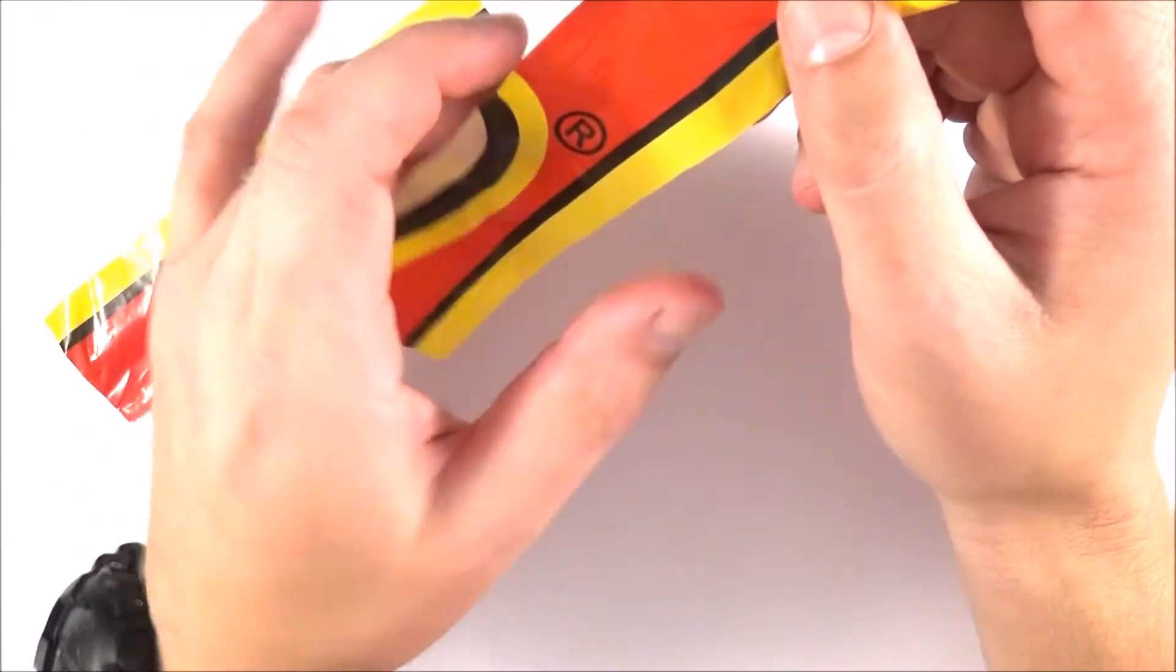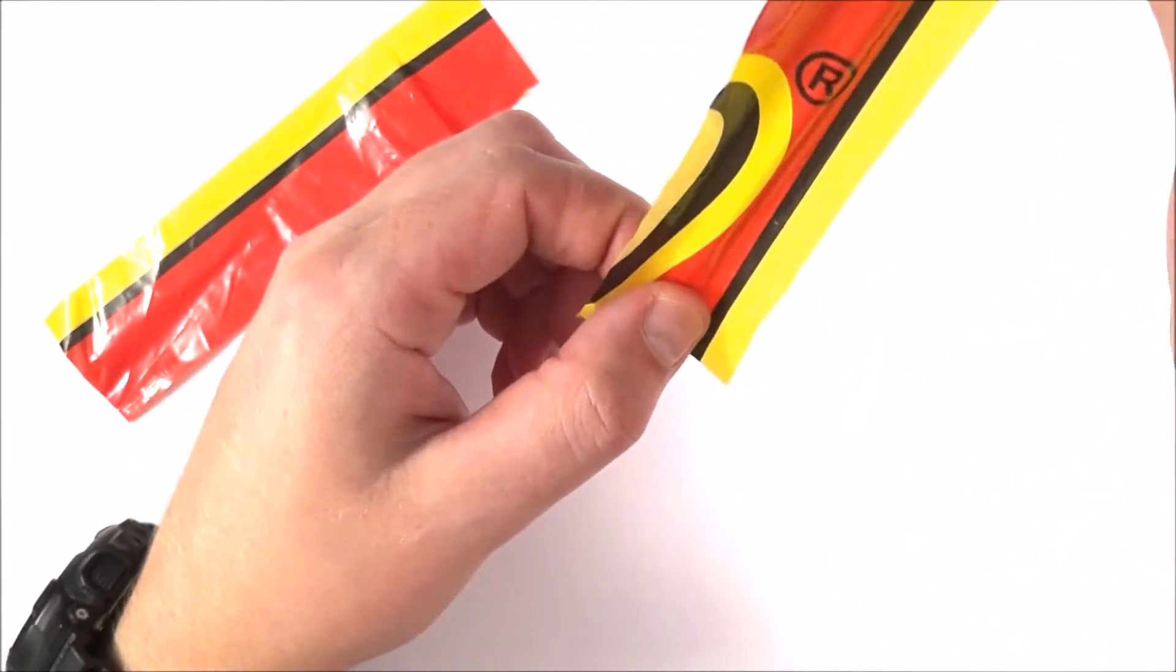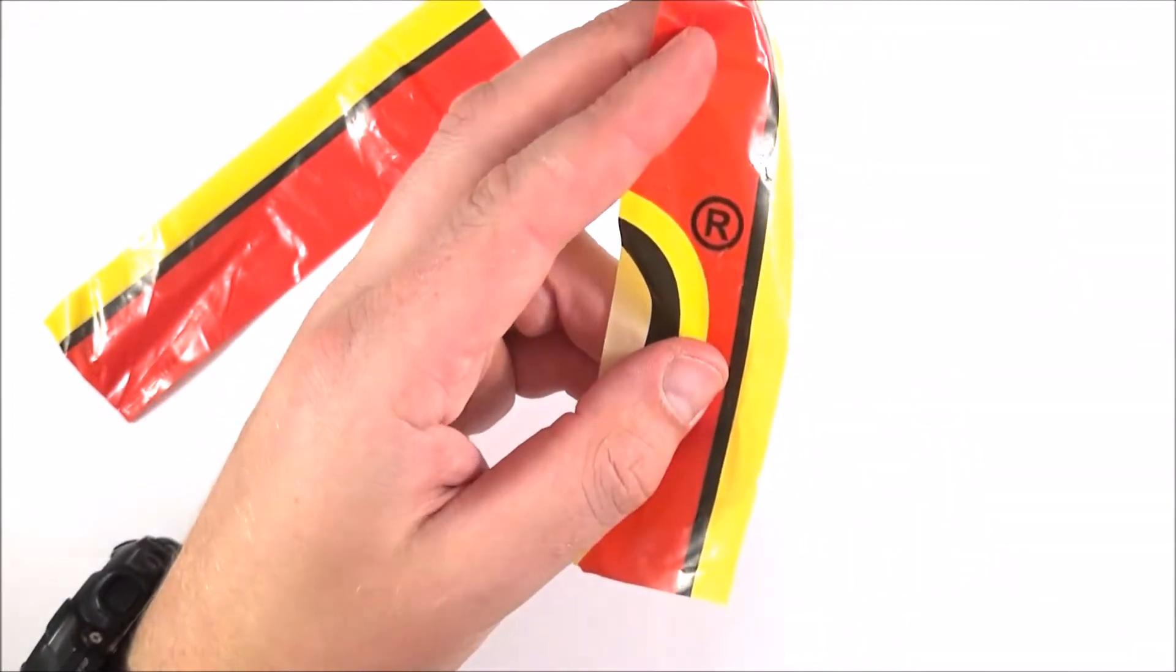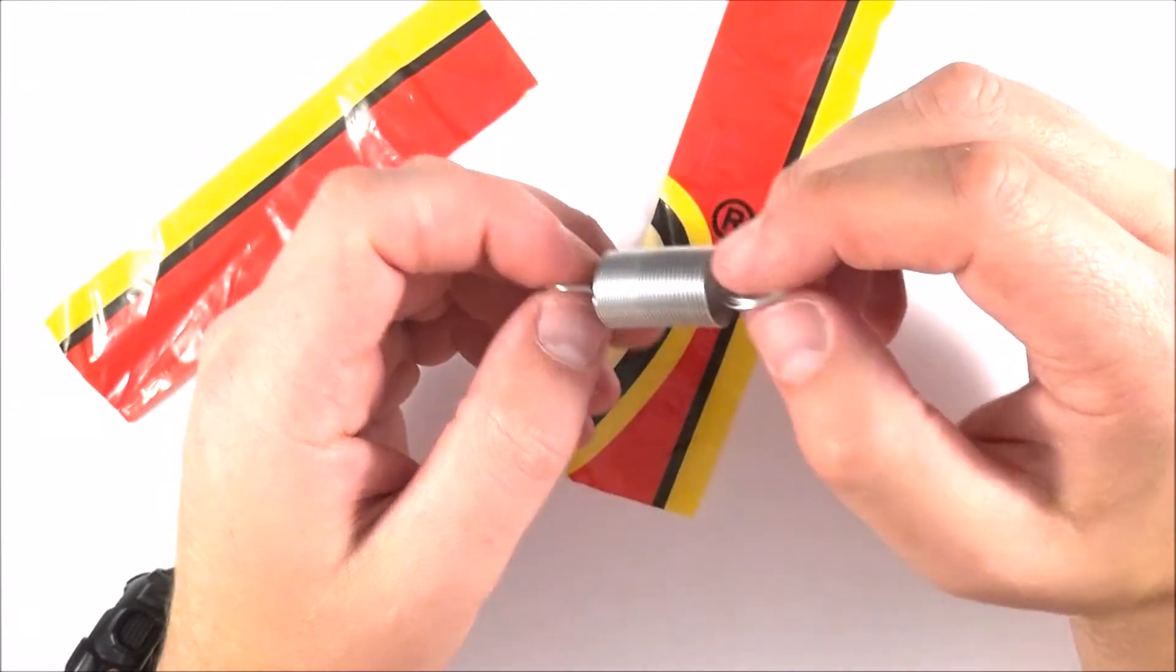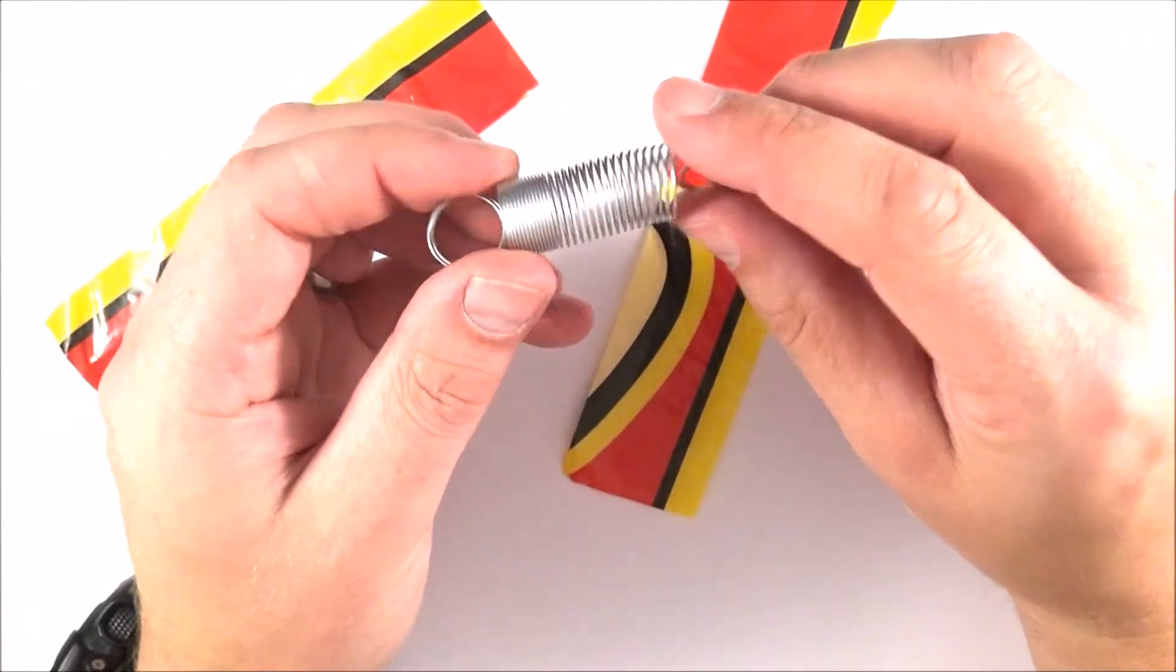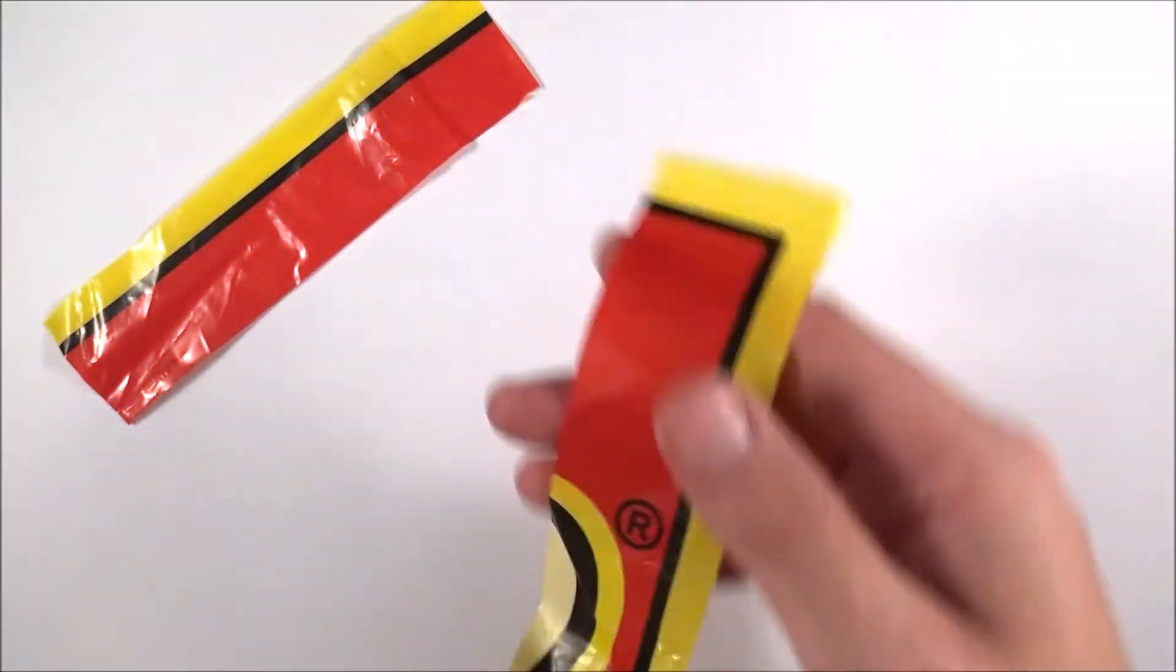The next challenge is how you mount this to actually record its properties as it's loaded. These things have a very different property to springs. With a spring, you have a fairly uniform extension and the force is proportionate to extension provided you don't go past the elastic limit. This is a polymer and behaves in a different way.